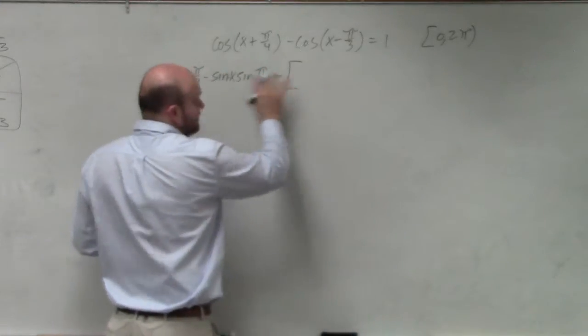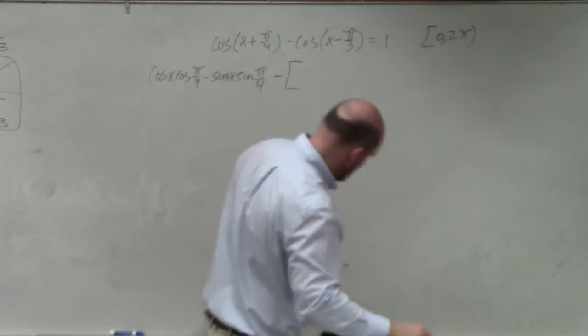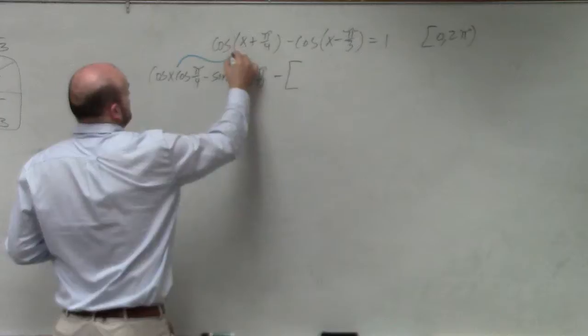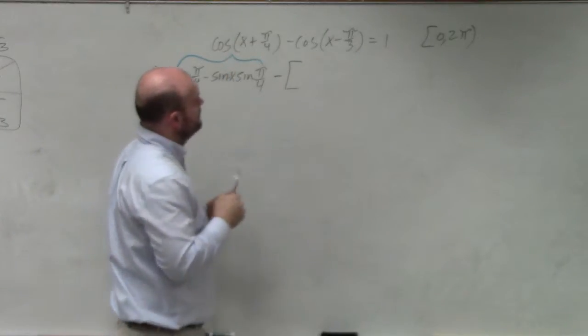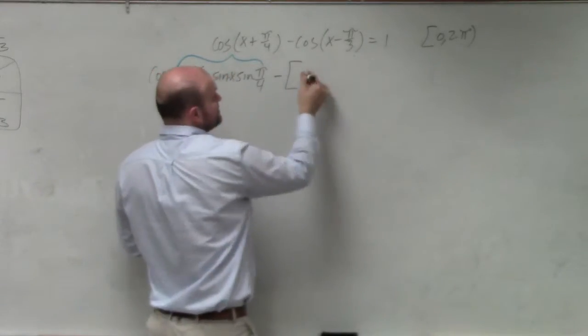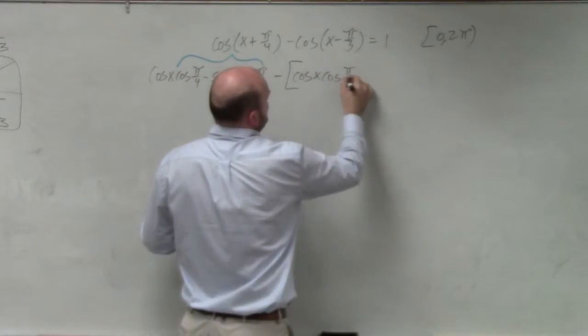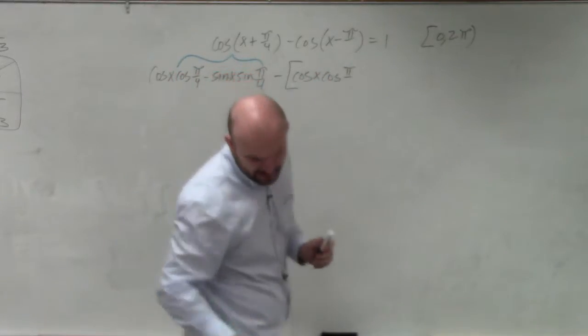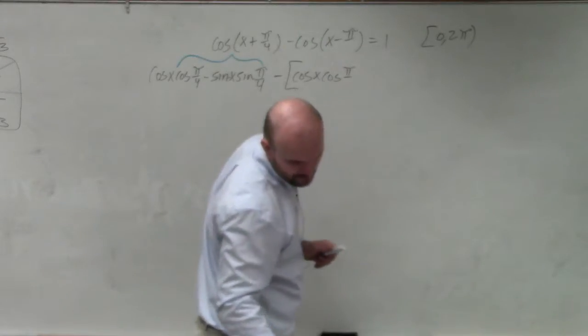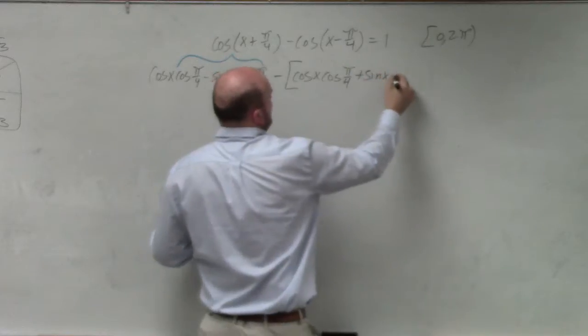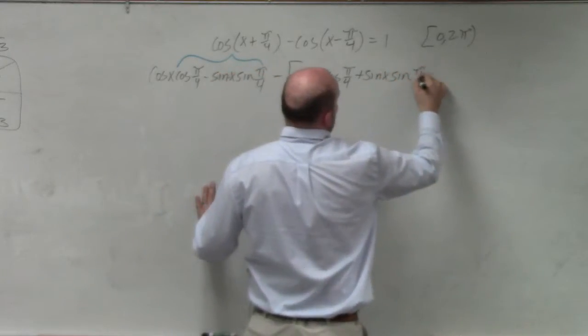And then minus, I want to make sure I'm minusing the whole thing. So I'm going to use parentheses. But so now I'm going to do the difference. So that's going to be cosine of x cosine of pi over 3. Oh, that's pi over 4. I wrote down the problem wrong. Yeah, that's pi over 4. Sorry. Cosine of pi over 4 plus the sine of x sine of pi over 4.